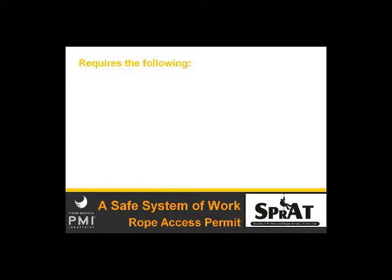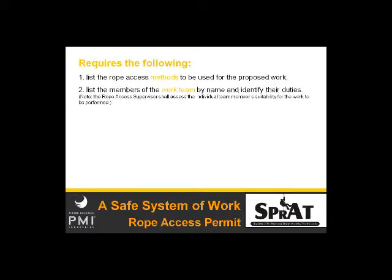In order to create a permit for rope access work, the things you need to consider include the rope access methods to be used for the proposed work. As we talked about earlier, there are different ways of accomplishing a given task, and identifying which methods will be used for this particular job is part of the permit. In addition, the members of the work team should be identified by name with their specific duties identified — that helps ensure that the people performing a particular duty are actually qualified and capable of performing that work.